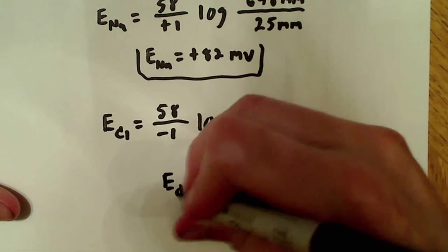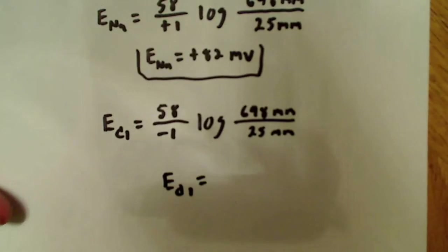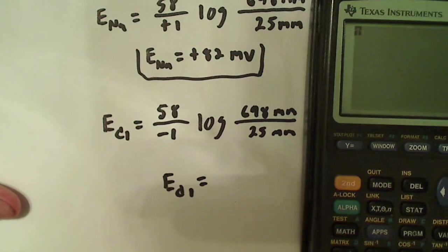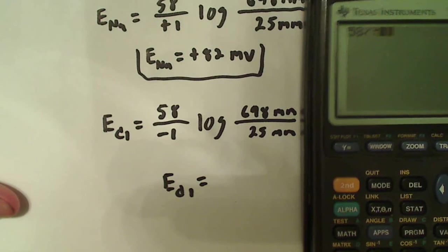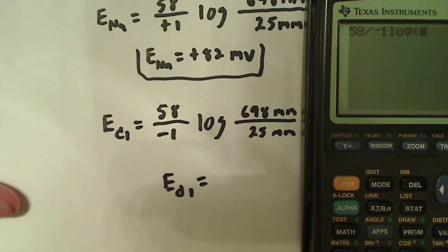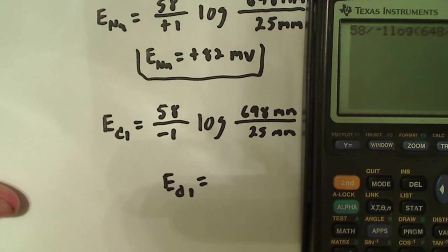And then I can say the equilibrium potential for Cl is equal to, and just plug in those exact same things. So, 58 divided by negative 1. And that's going to be multiplied by the log of 648 over 25.